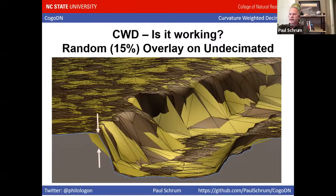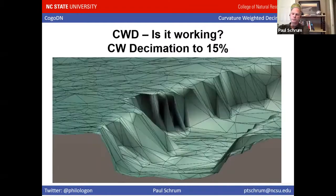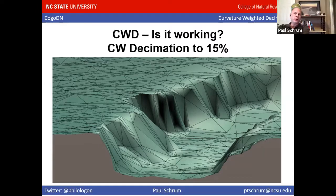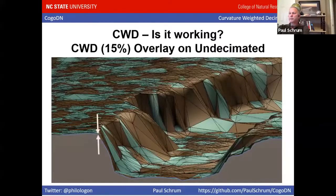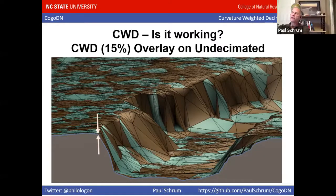If you're a hydrologist modeling cross sections for a hydrology program, that six-foot error could be significant. Here is what it looks like when we decimated to 15% using curvature weighted decimation. The sparsity of points is about the same as random decimation at 15%, but that profile has no error. The algorithm found those points with high curvature at the break line and said we're going to keep all of those points. That's what it means for it to be weighted — the priority of keeping a point is weighted by its curvature.